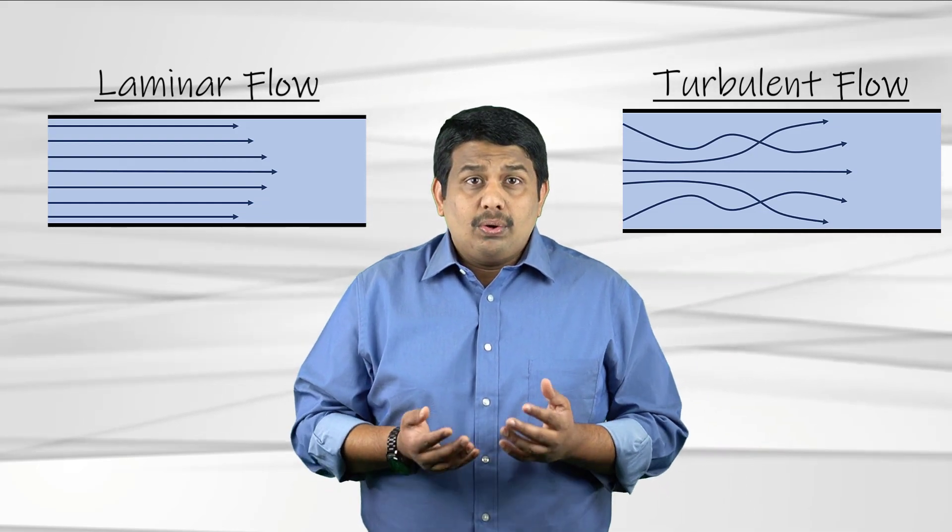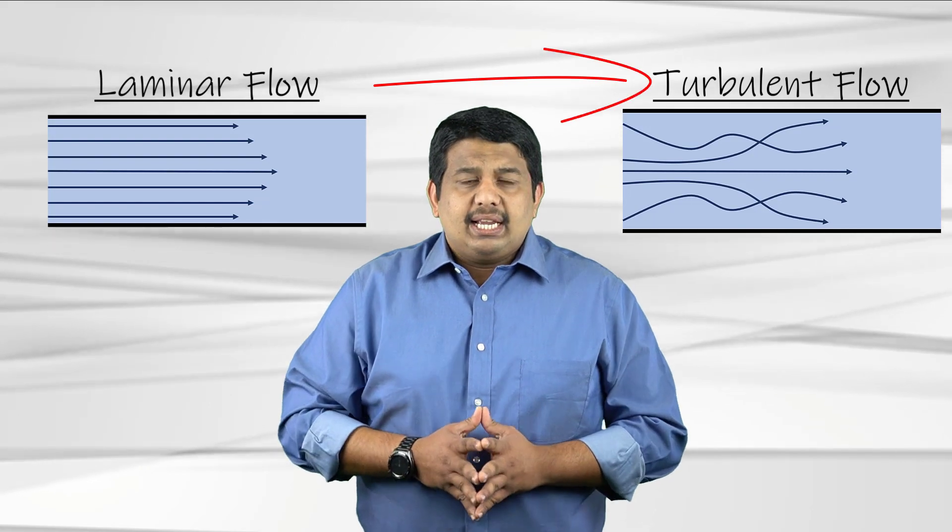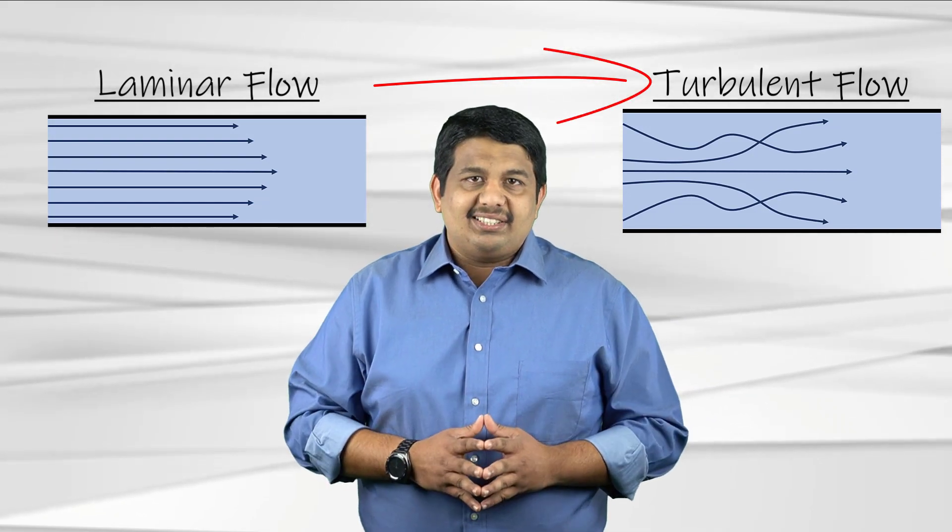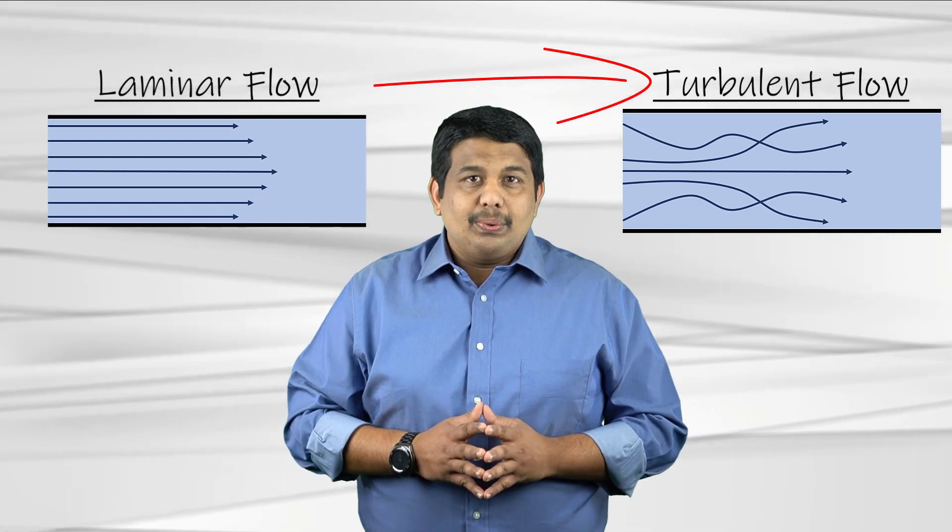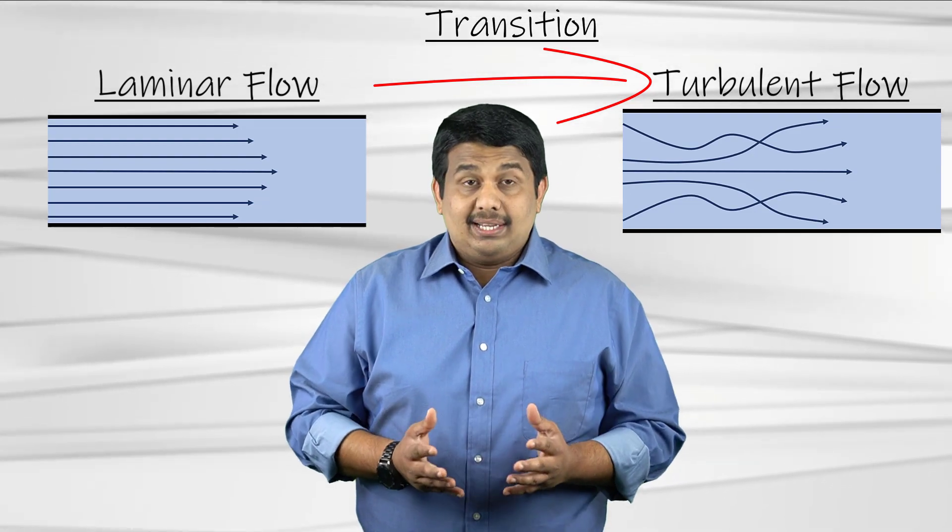The process through which a laminar flow becomes turbulent consists of multiple stages and is often referred to as transition or the onset of turbulence. For most industrial fluid flows, the Reynolds number at which transition occurs is relatively small meaning that these flows are almost always turbulent.